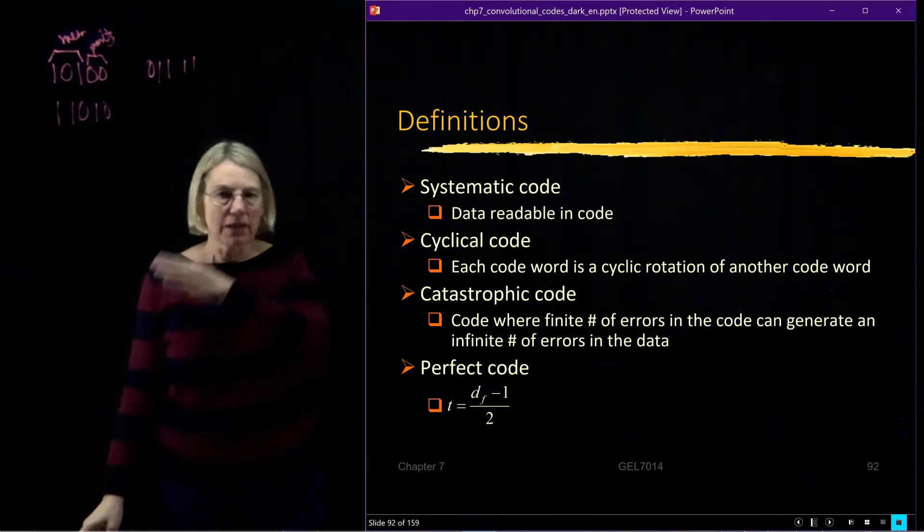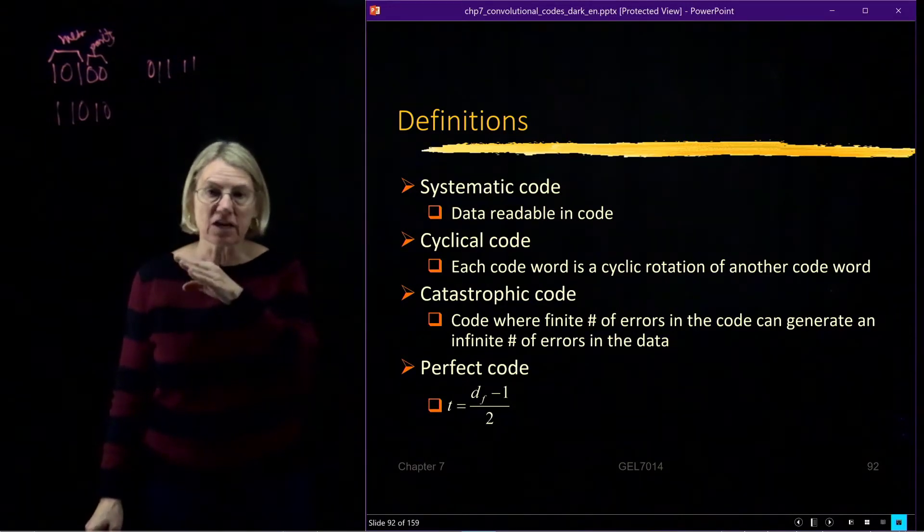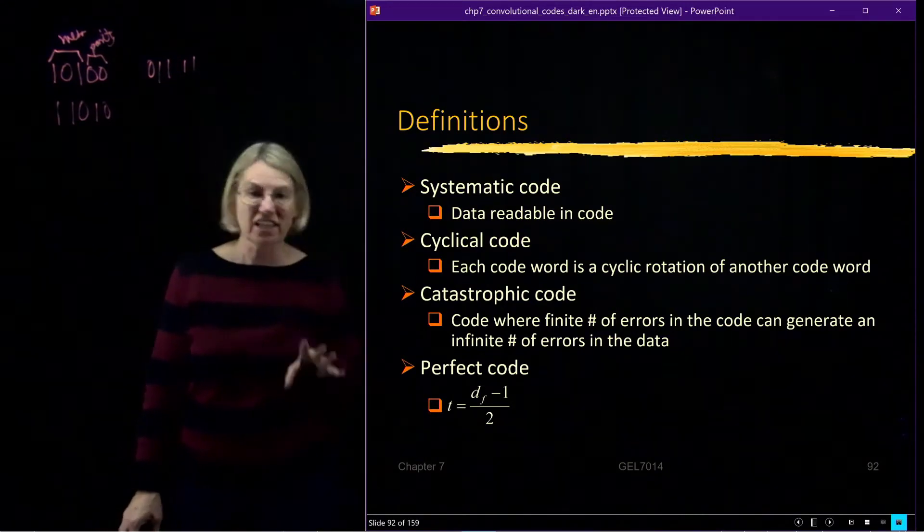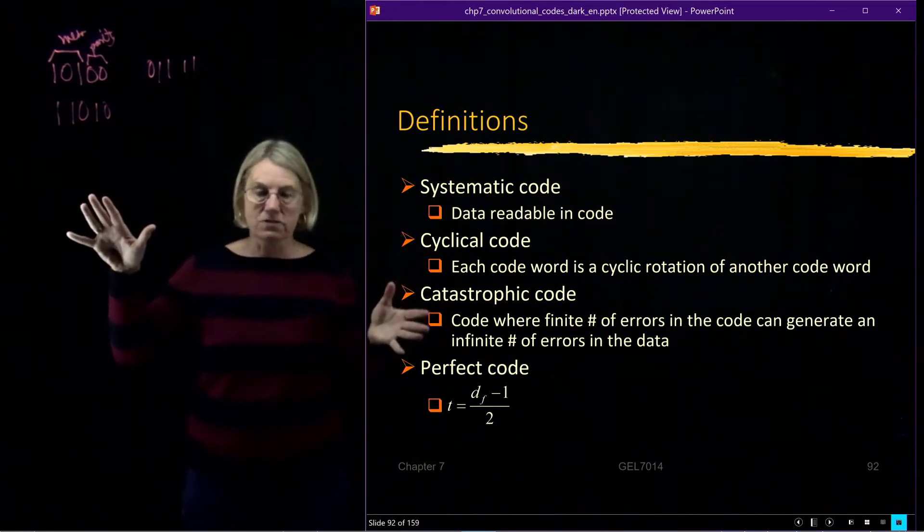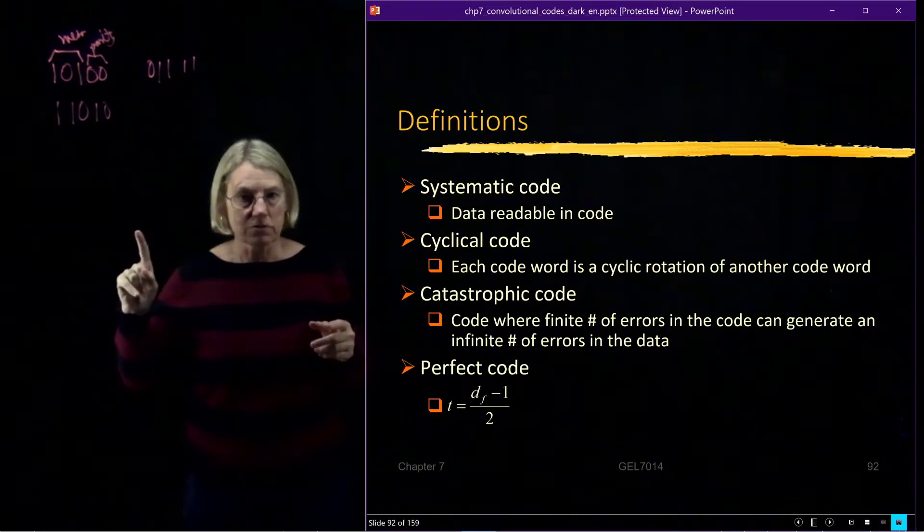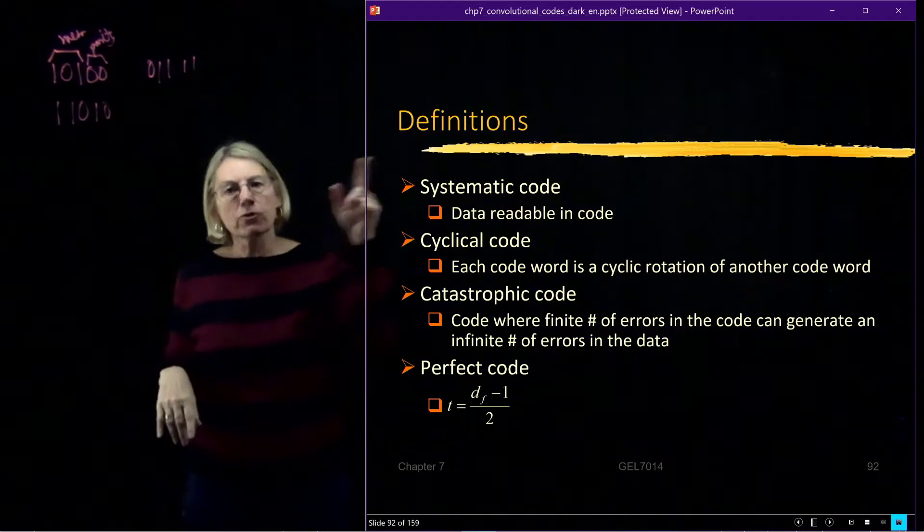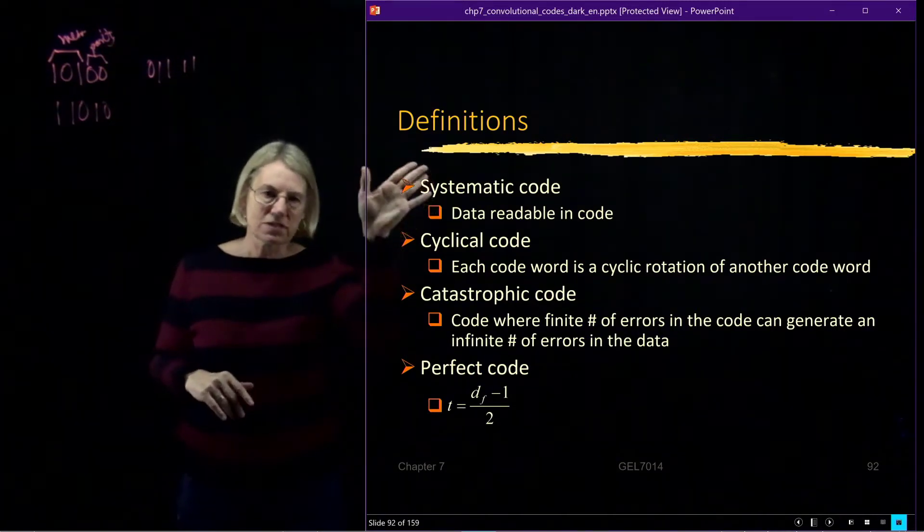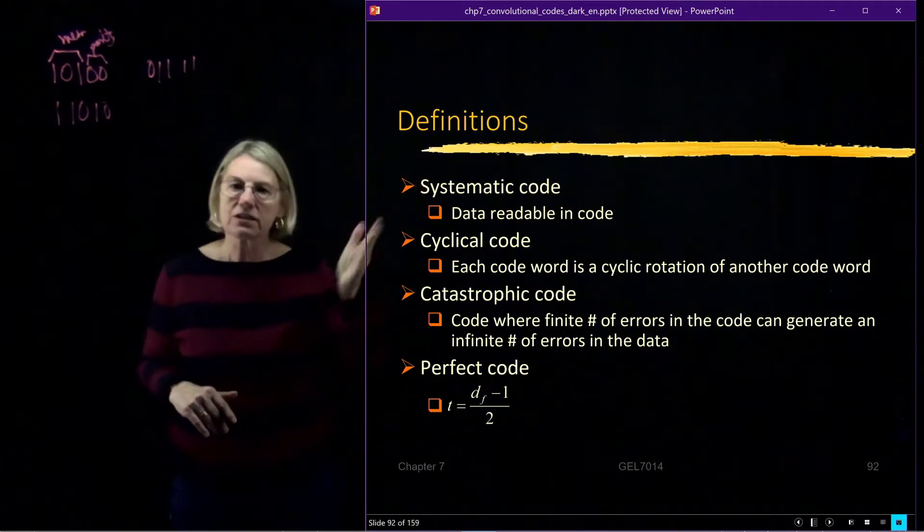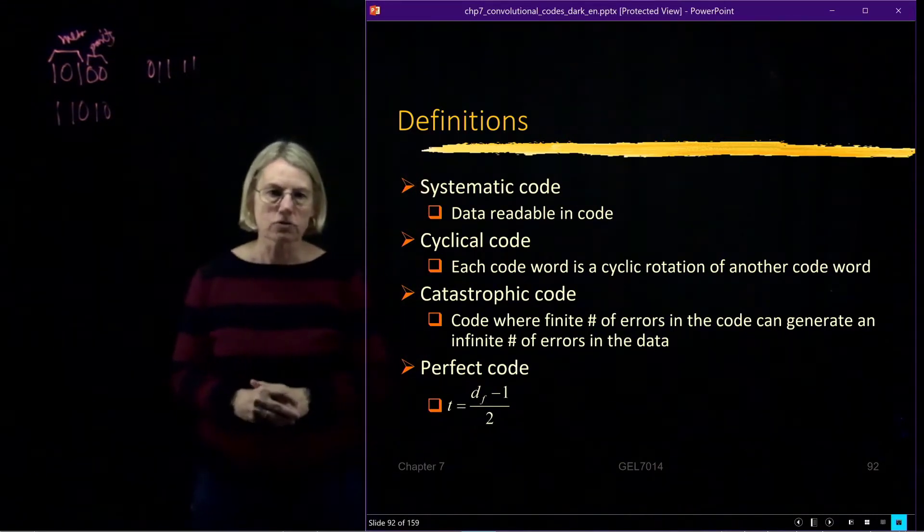Systematic codes and block codes are really convenient because the performance is exactly the same for systematic codes or non-systematic codes. But not true in convolutional codes. Convolutional codes, if I forced myself to have a systematic code, that code would not be as good as others. So systematic code, that's the definition, but we're not going to see them very often in convolutional codes.